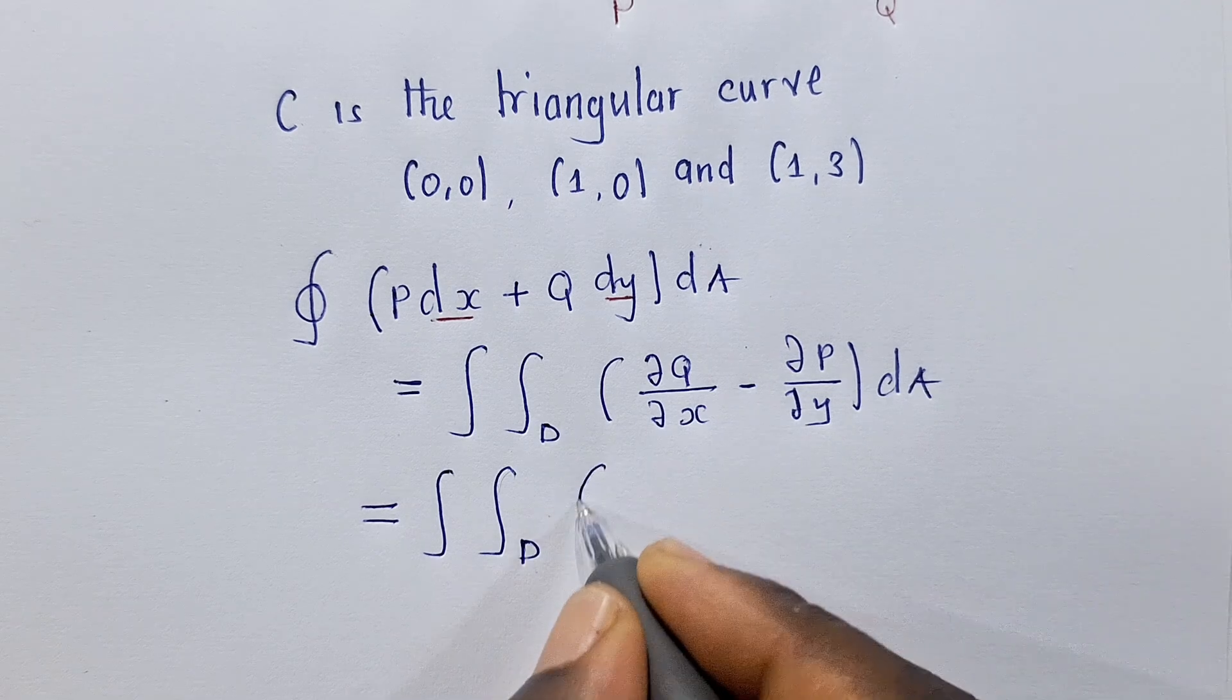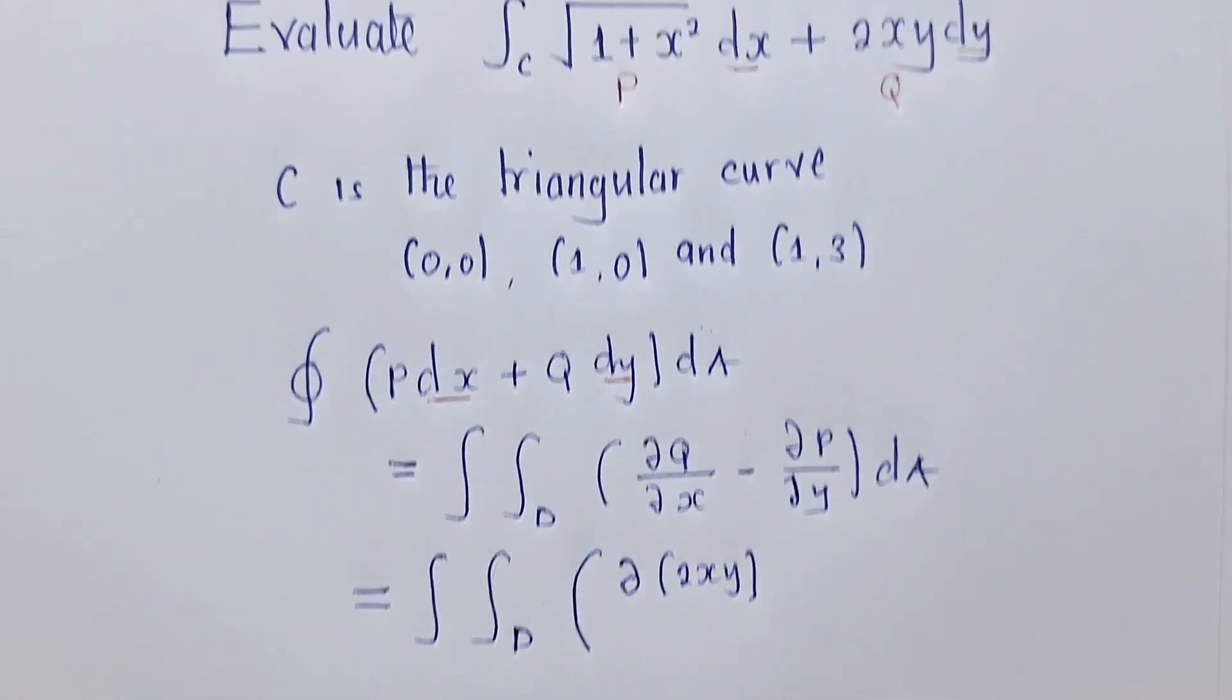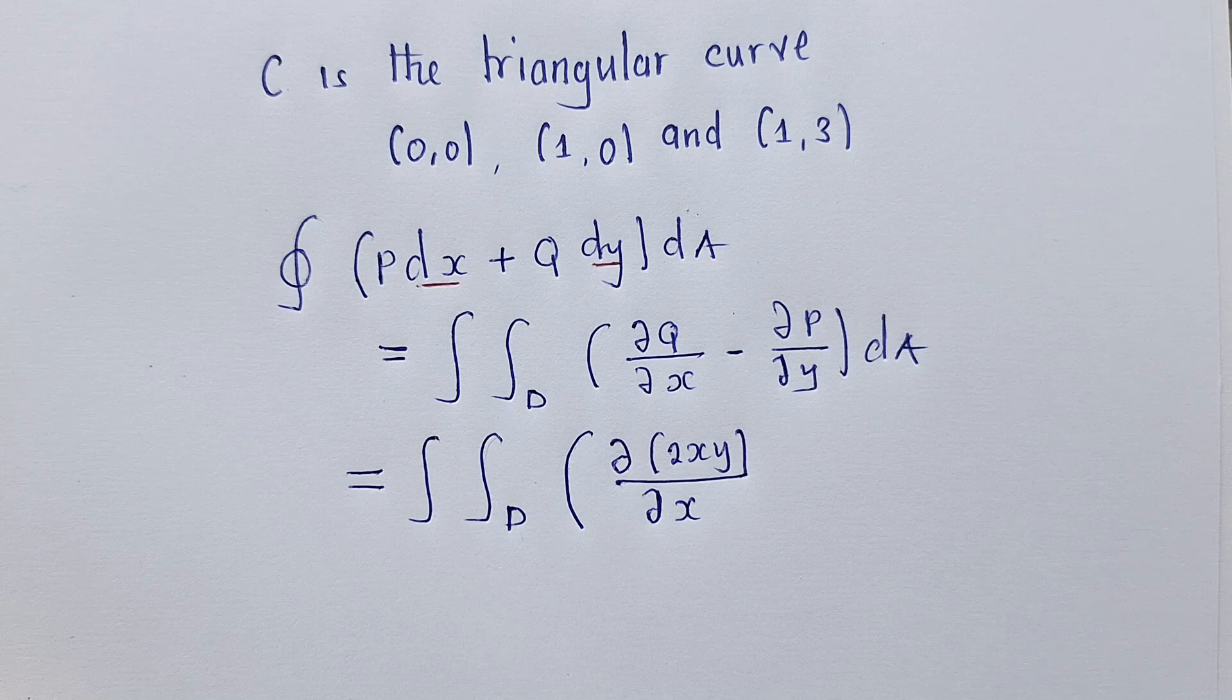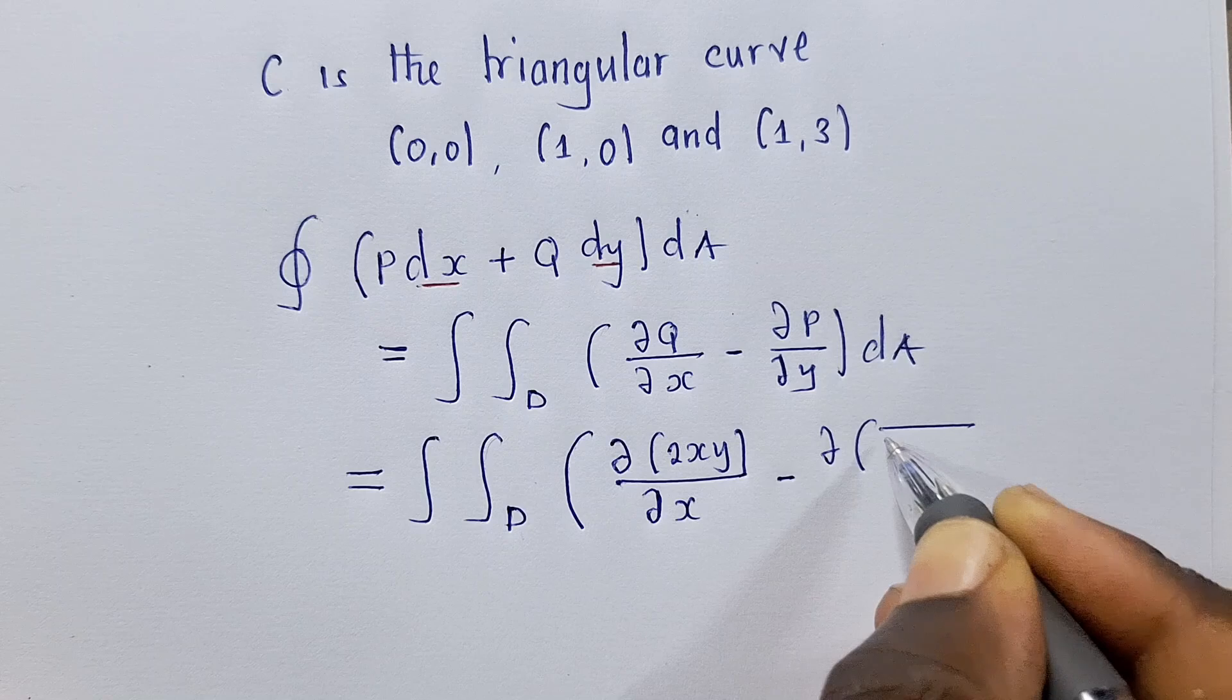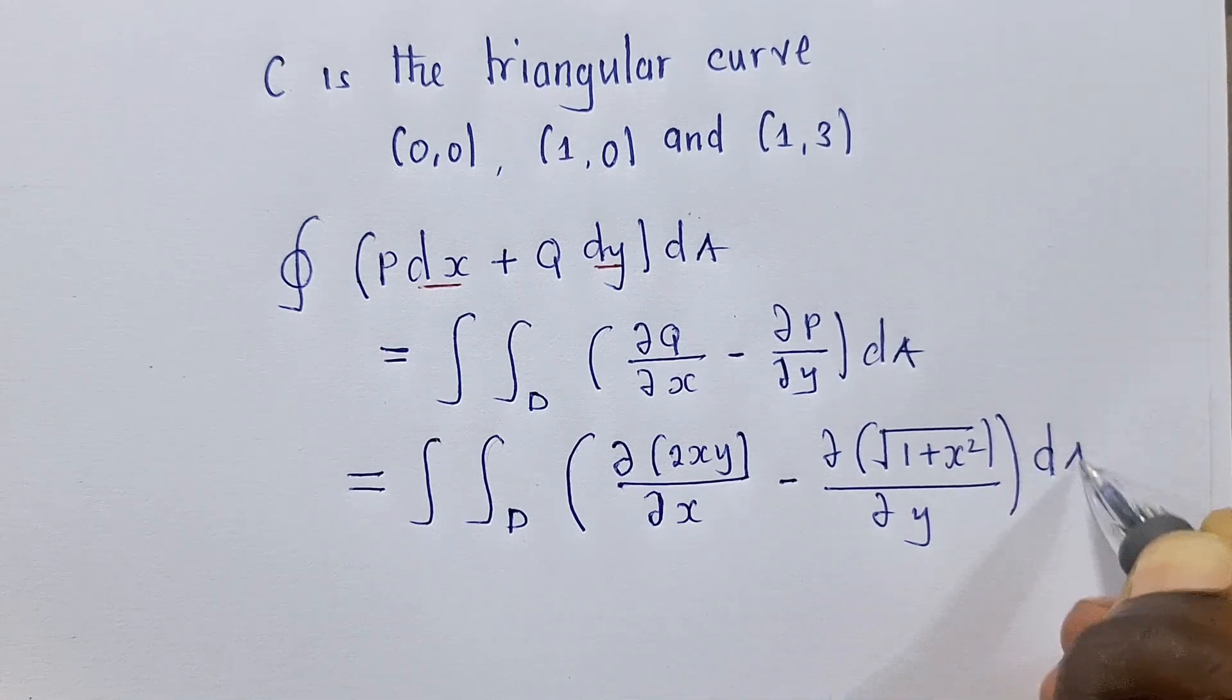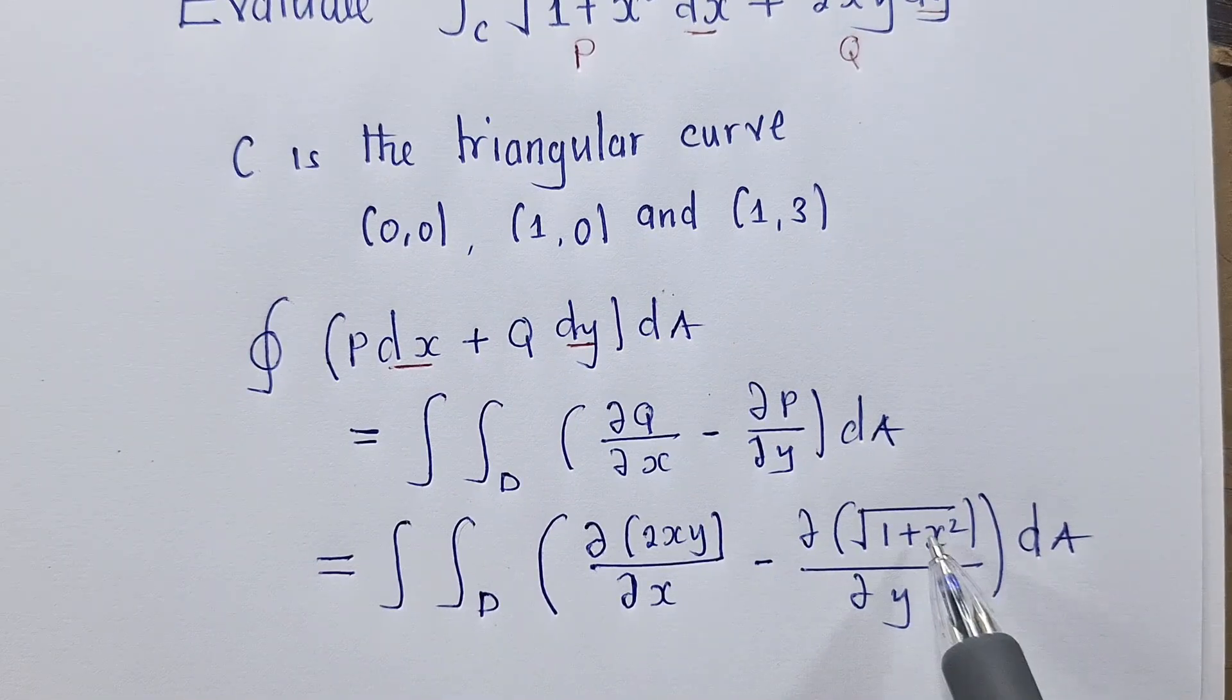We are basically going to write equal to the double integral over this region D, and then here we're going to find the partial derivative of 2xy, so Q here is 2xy, and then we shall say del/dx minus del of square root of 1 plus x squared over del y. I've got some region here.